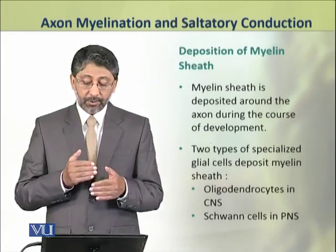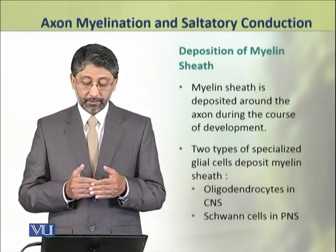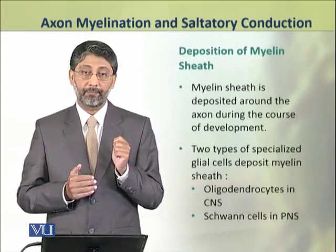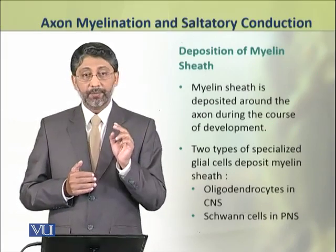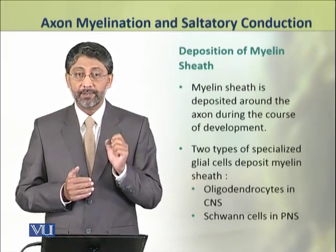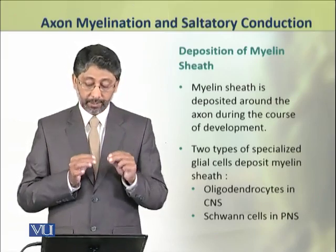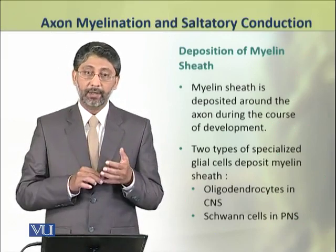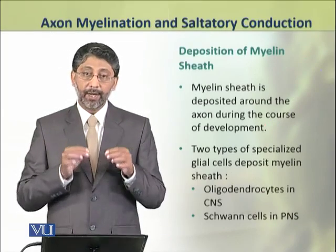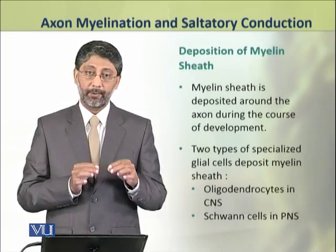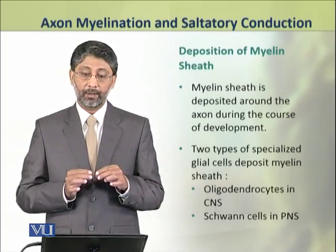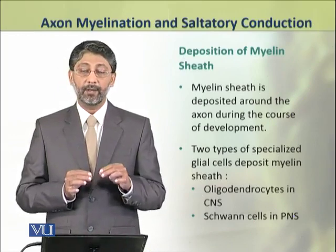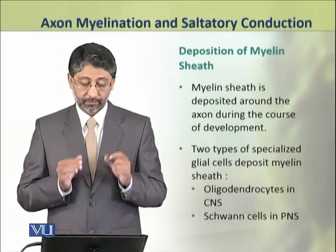The myelin sheath is deposited around the axon during the course of development. Two types of specialized glial cells produce this myelin sheath. In the central nervous system, oligodendrocytes deposit myelin sheath, while in the peripheral nervous system, Schwann cells secrete myelin sheath around the axons.